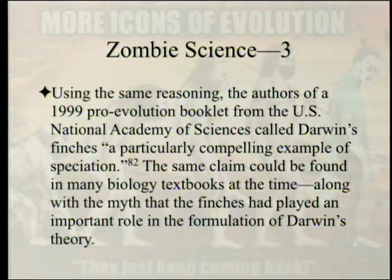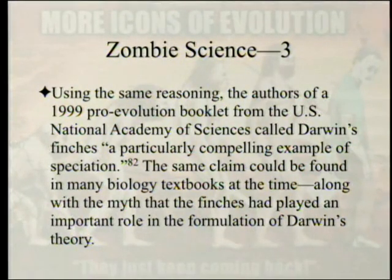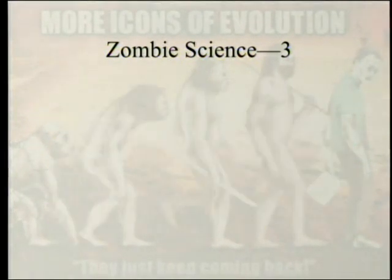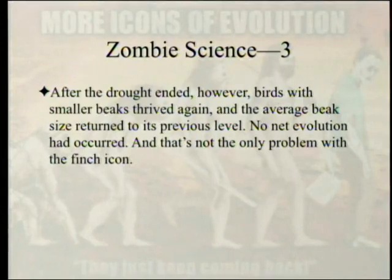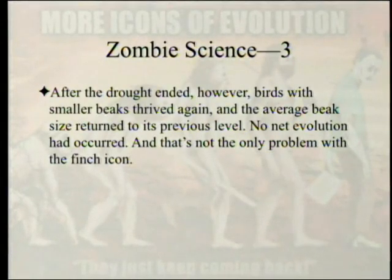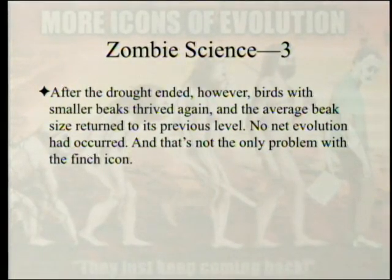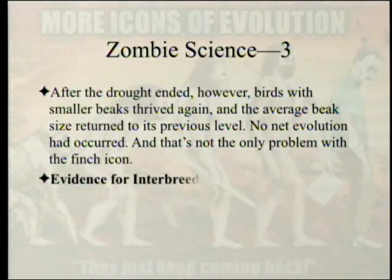Textbooks also carried the myth that finches played an important role in formulating Darwin's theory. But after the drought ended, birds with smaller beaks thrived again, and the average beak size returned to its previous level. No net evolution had occurred. And that's not the only problem with the finch icon.